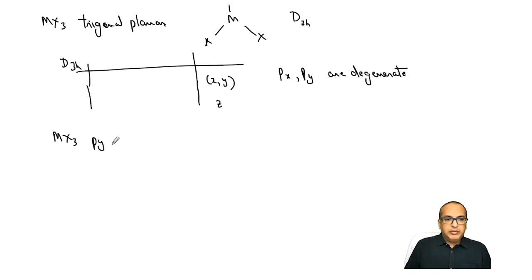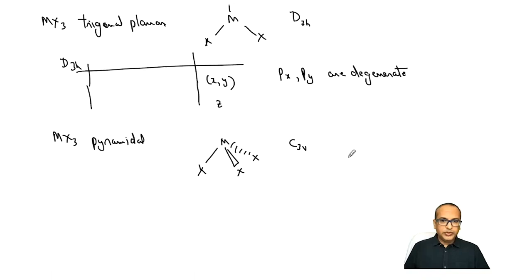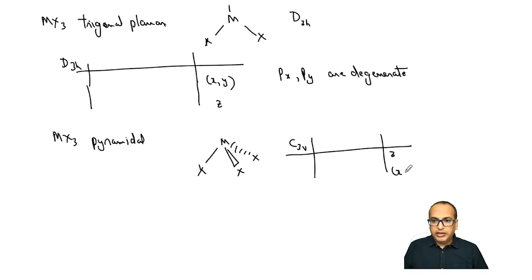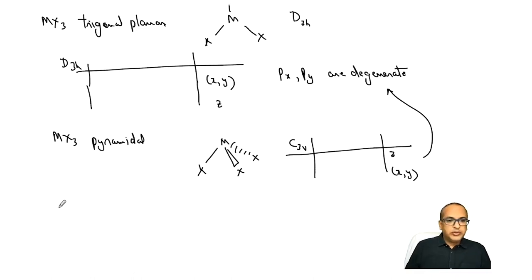For MX3 pyramidal (like ammonia), the point group is C3v. In the C3v character table, z appears on one row and x, y appear together on another row. This also implies that px and py are degenerate, while pz is separate.